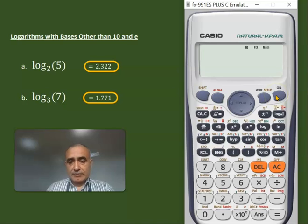Okay, let's go for another example. So again, log, then 3. We need comma, shift. Here is comma, 7, parentheses, and enter. 1.77.